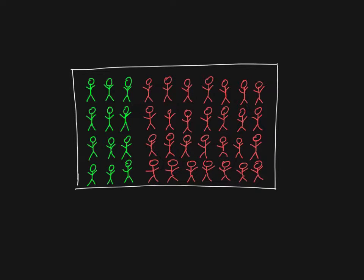We've been talking about the idea of having a population — a group of people that you want to be able to make some kind of statement or conclusion about. You're trying to find something out about this group of people, but you don't necessarily want to or can't study the whole group. So you take a sample of that group, study them, and hope that whatever you find about the sample is also true about the population.